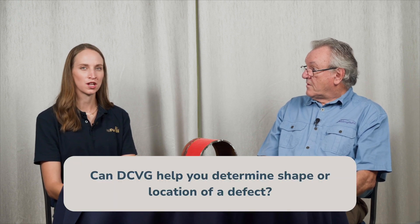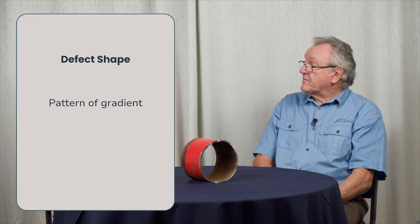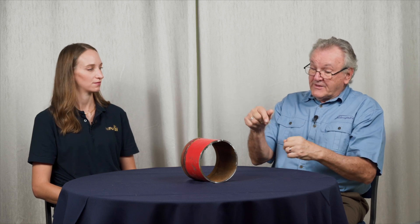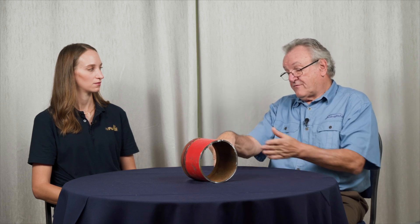Can a DCVG survey help identify the shape or location of a defect? To a certain extent, yes. You wouldn't be able to tell whether a defect was round or oval, because the gradient measured is not that precise. But if you had a long linear defect like a scratch, you would be able to determine that by the nature of the gradient pattern. Also, if the defect is on top of the pipeline you'll get a very sharp gradient; if it's underneath, you'll get quite a diffuse gradient; and if it's on the side of the pipeline, the defect center point will be offset from the pipeline centerline.